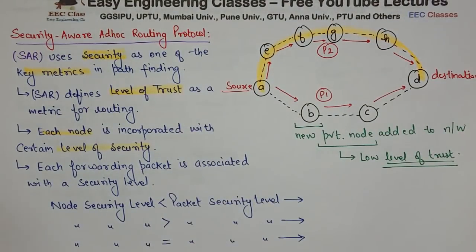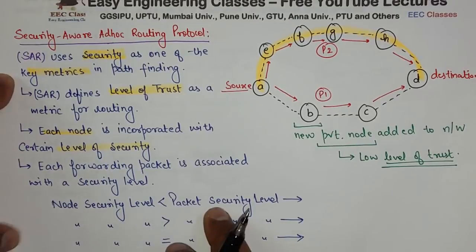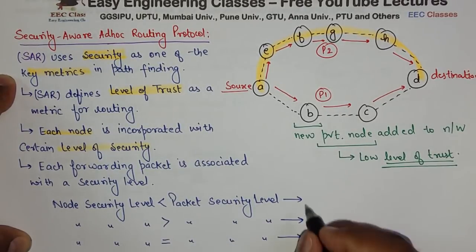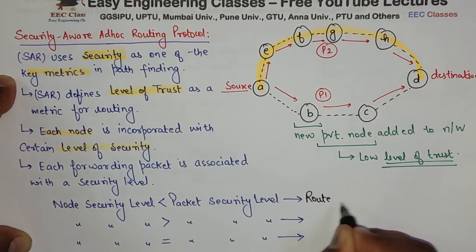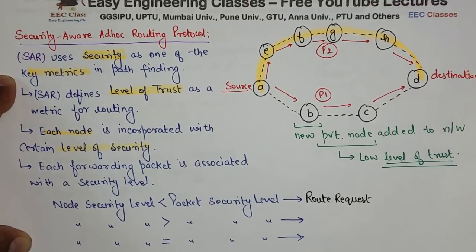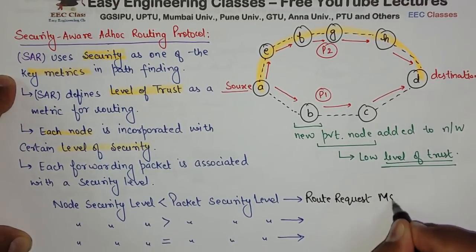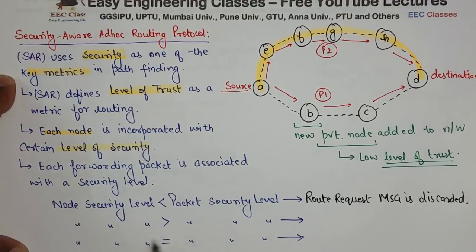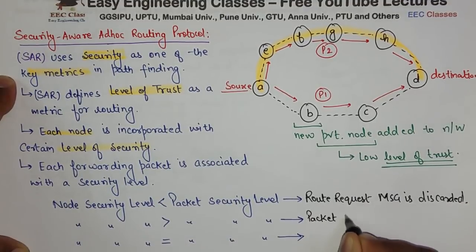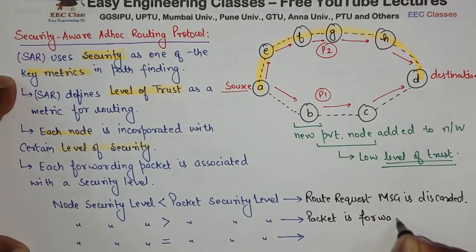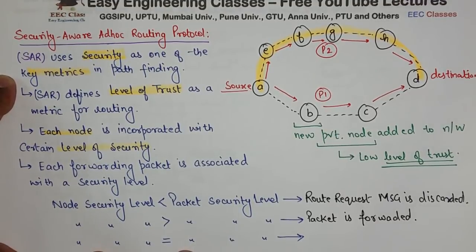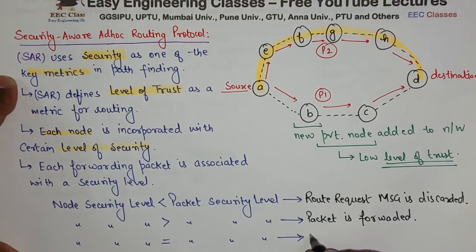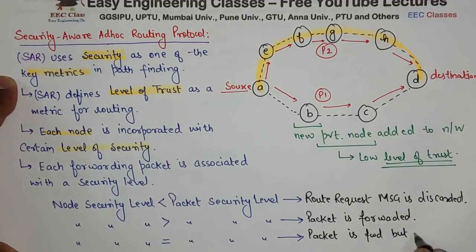There are three cases based on a node's security level versus a packet's security level. First, if the node security level is less than the packet security level, the route request message is discarded because the packet is not trusted. Second, if the node security level is greater than the packet security level, the packet is forwarded normally. Third, if both security levels are equal, the packet is forwarded but the node cannot view the message content.